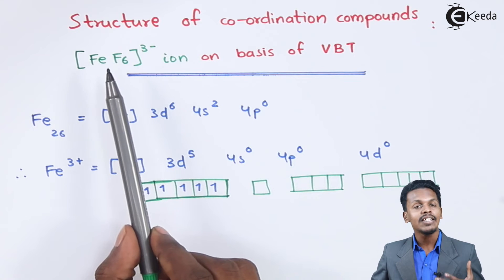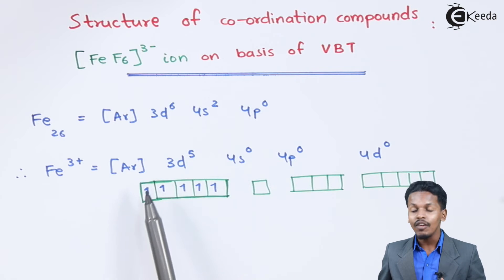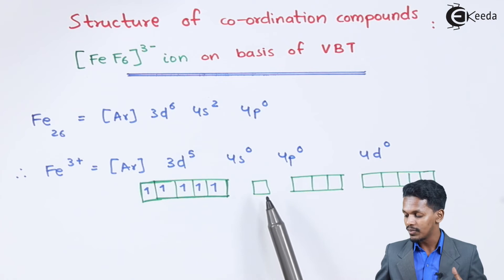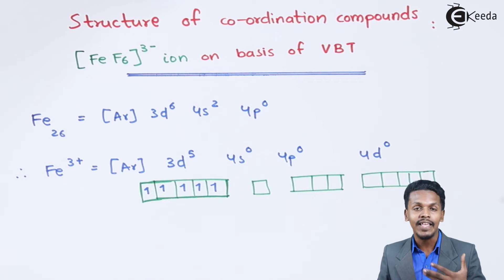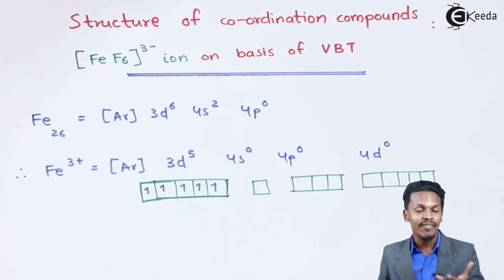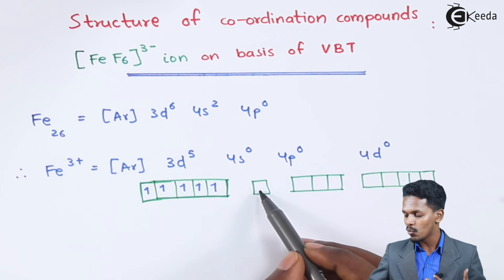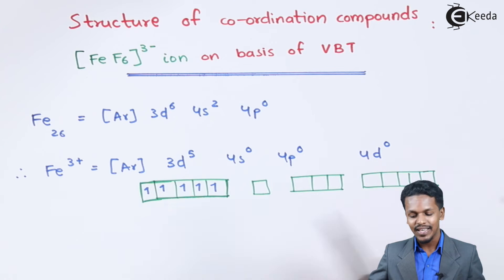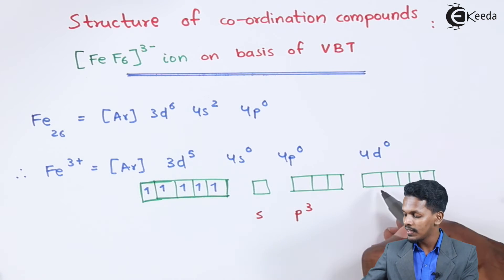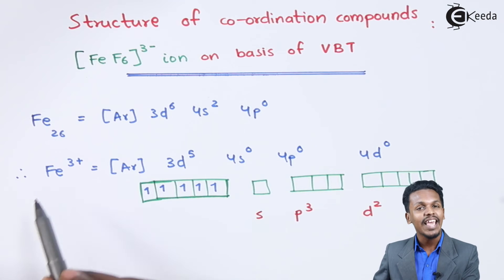The ligand here is fluorine, which is a weak field ligand. Therefore, there will be no pairing of electrons. The empty orbitals available for hybridization are: one s orbital, three p orbitals, and two d orbitals from the five 3d orbitals — giving us six empty orbitals in total (1, 2, 3, 4, 5, and 6).